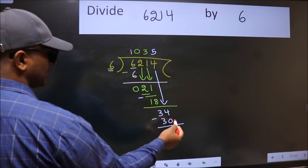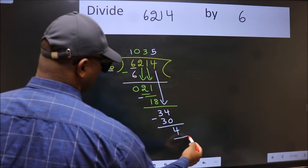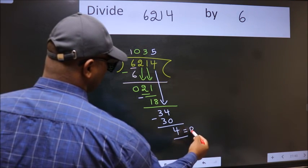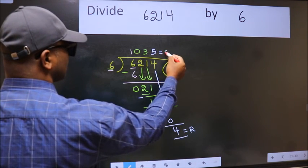No more numbers to bring down. So we stop here. This is our remainder and this is our quotient.